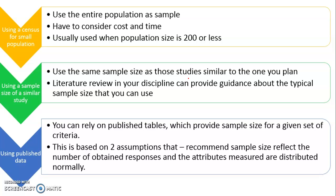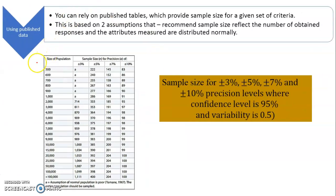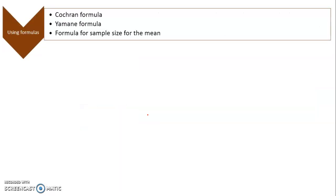The key assumptions behind published tables are that the recommended sample size reflects the number of obtained responses, not the number of questionnaires sent out, and that the attributes measured are normally distributed. One example is the published table based on Yamane's 1967 formula, where the first column is the population size and subsequent columns show the sample size at different precision rates: plus or minus 3%, 5%, 7%, and 10%.